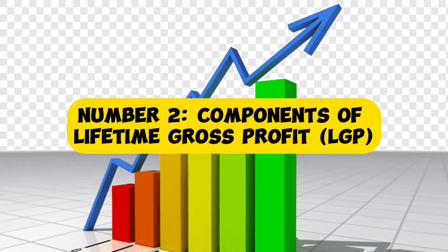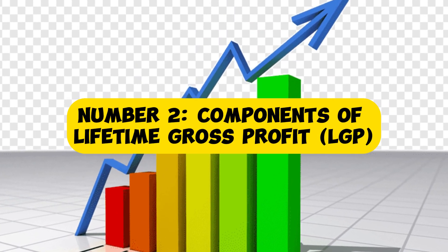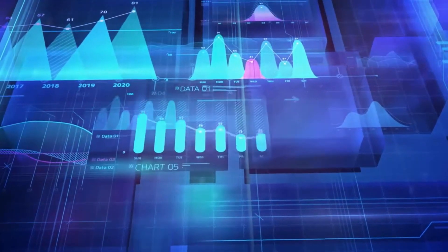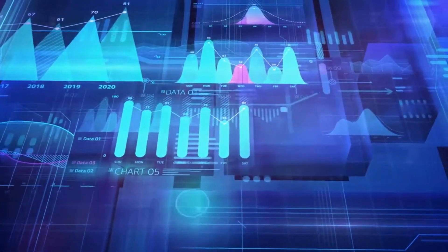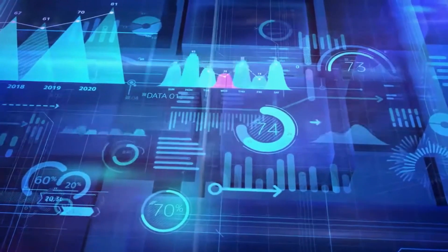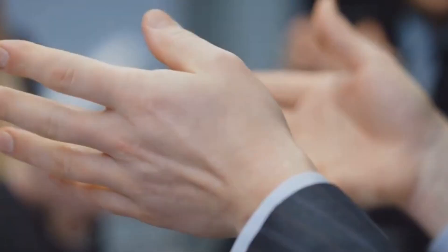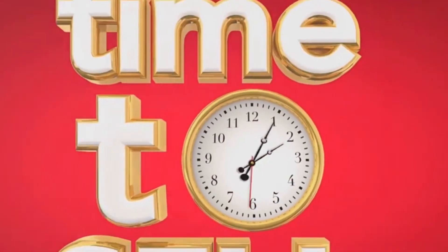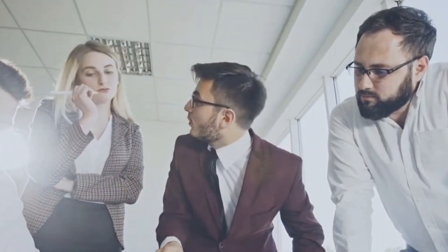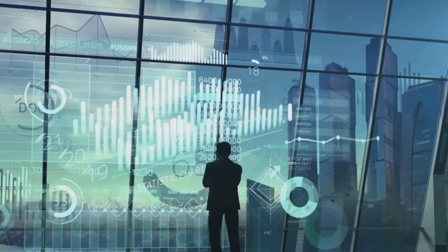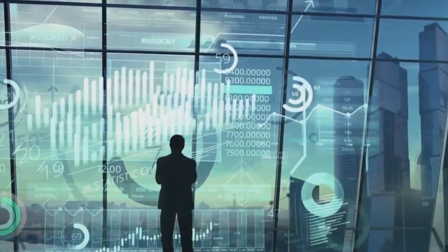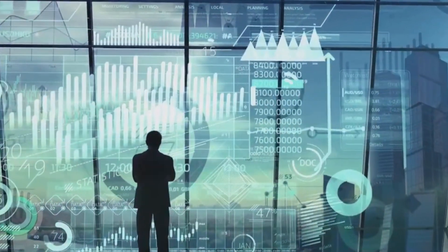Number two: components of lifetime gross profit, LGP. Let's journey into the second realm of business enlightenment — the components of lifetime gross profit, LGP. More than mere figures, LGP unveils a narrative, a strategic revelation that goes beyond the numbers. Within this concept lie two pivotal components: lifetime and gross profit. Lifetime represents the average lifespan of your customers, a crucial factor in predicting and strategizing for the future. It's about understanding how long your clientele sticks around, forming the cornerstone of customer relationship management.